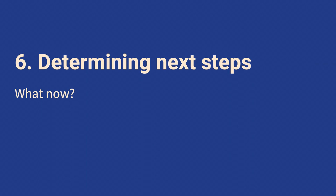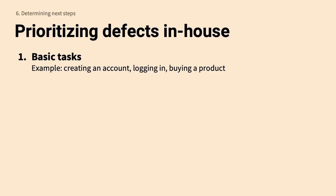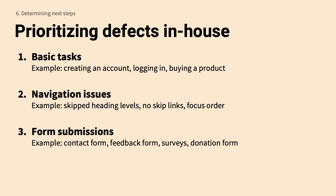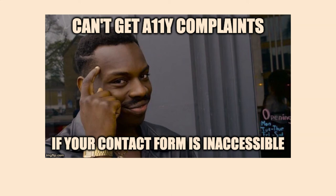So you have all this good data — what do you do with it? First, prioritize everything. Prioritize basic tasks: creating an account, logging in, buying a product — make sure those are accessible. Then navigation issues: skipped heading levels, no skip links, skip links that don't work, focus order. Form submissions: contact forms, feedback forms, surveys, donation forms — make it possible for any user to get in contact with you. The logic that 'you can't get accessibility complaints if your contact form isn't accessible' is not a good excuse.